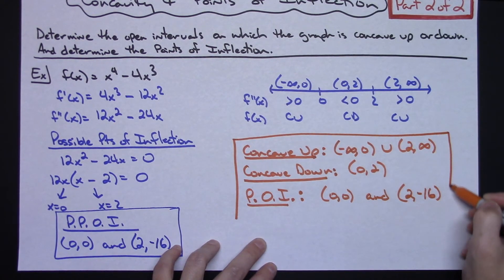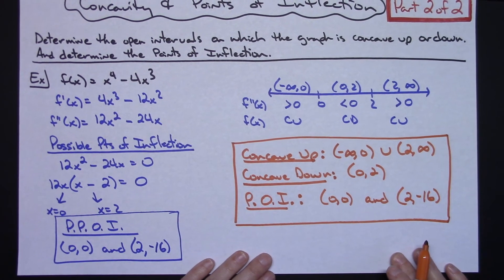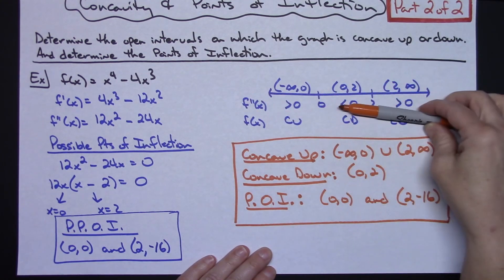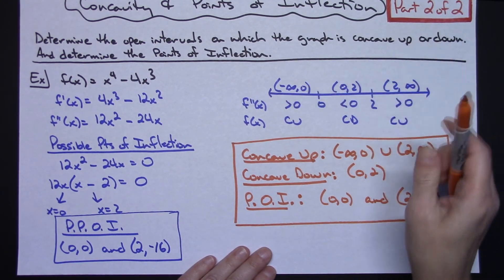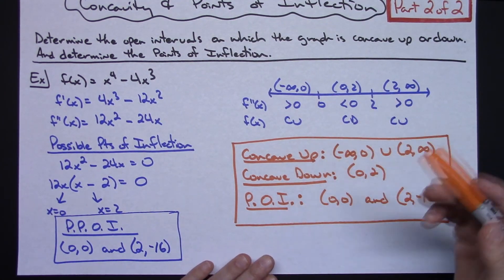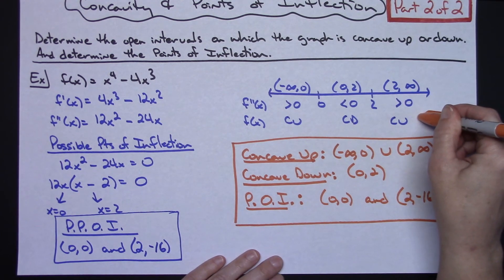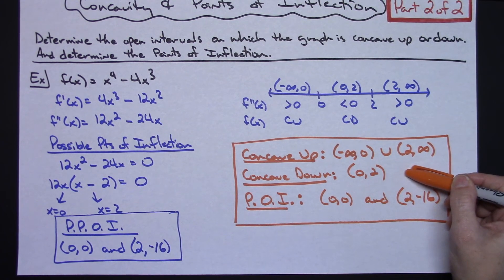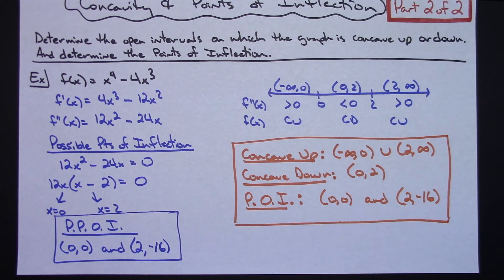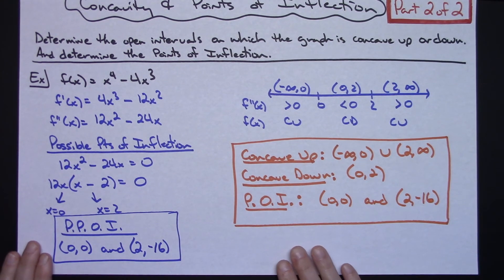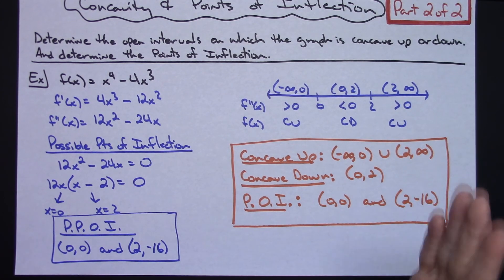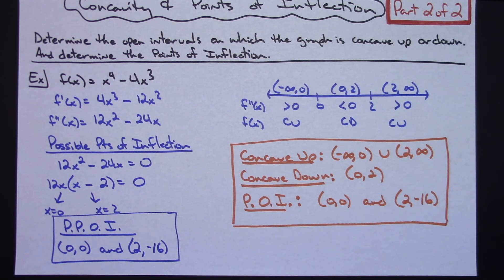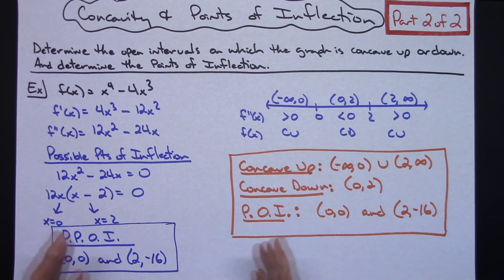One note especially for AP Calculus students: doing the number line alone is not sufficient justification for your work. You can use it to help determine the intervals, but you must also write down the concave up and concave down intervals explicitly to receive credit on the AP Calc exam. This was part two of two on concavity and points of inflection — don't forget to watch the first video. Thanks for watching, and be sure to subscribe to the channel.